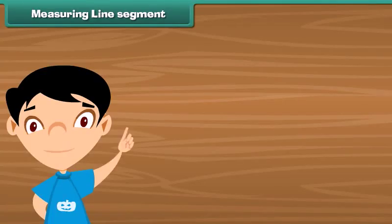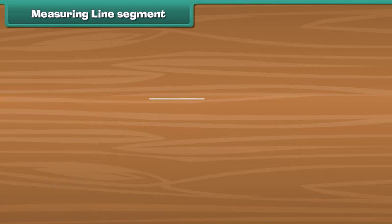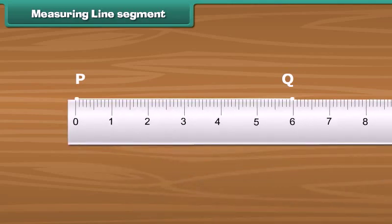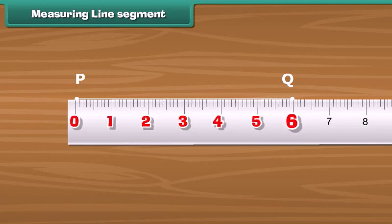Let us measure a line segment with the help of a centimeter scale. Draw a line segment with its end points as P and Q. Place the zero end of the scale exactly below point P. See where point Q lies on the scale — Q lies on number six. Between zero and six there are six centimeters, so the length of line segment PQ is six centimeters.